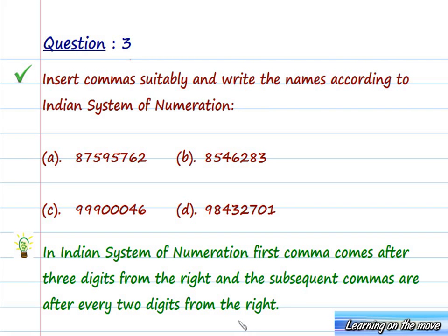Question number three: insert commas suitably and write the names according to the Indian system of numeration. Here we have four numbers in which we have to insert commas and write the names. The key point is that in the Indian system of numeration, the first comma comes after three digits from the right, and the subsequent commas come after every two digits from the right.